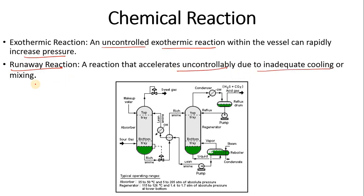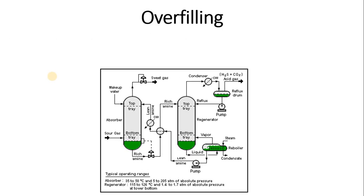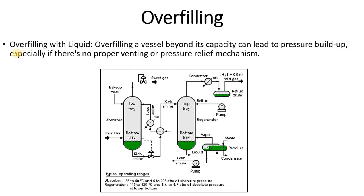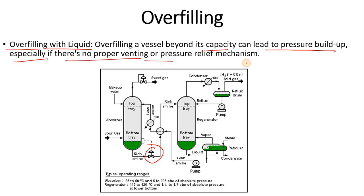A runaway reaction — one that accelerates uncontrollably due to inadequate cooling or mixing — is another cause. Overfilling is also a reason: if the outlet is closed, overfilling can occur. Filling a vessel beyond its capacity can lead to pressure buildup, especially if there is no proper venting or pressure relief mechanism. Overfilling can happen in many ways, most commonly when the outlet is closed or blocked.